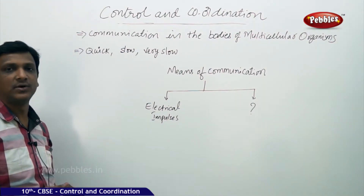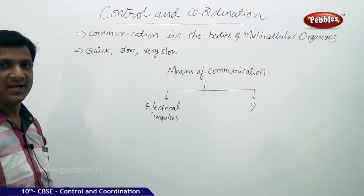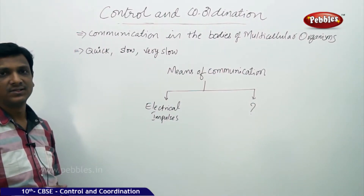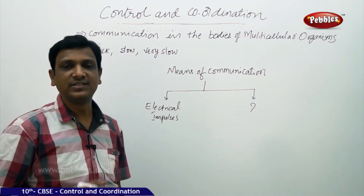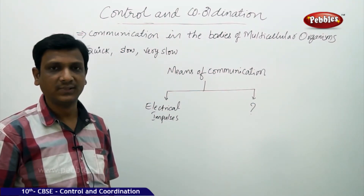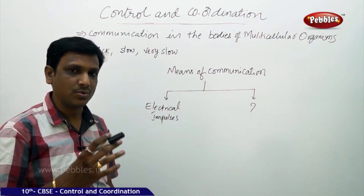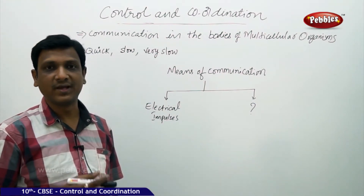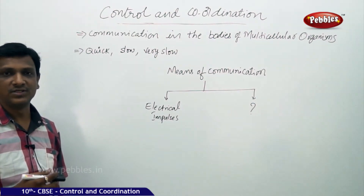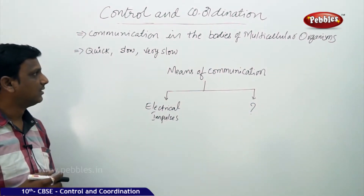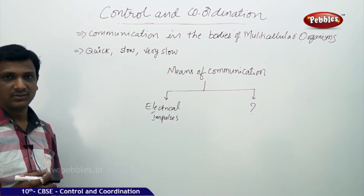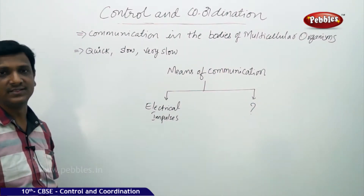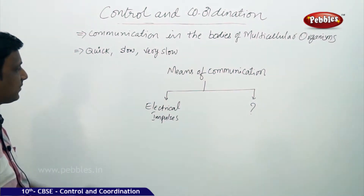Both plants and animals show reflexes — quick responses, slow responses, and very slow movements. Growth is very slow; you cannot observe it with your naked eye. You need to watch a time-lapse video where a camera is fixed at one point for two days, three days, a week, or a month to see how the plant grows and how flowers bloom — you can find these videos on YouTube. In animals, electrical impulses are the major means of communication.